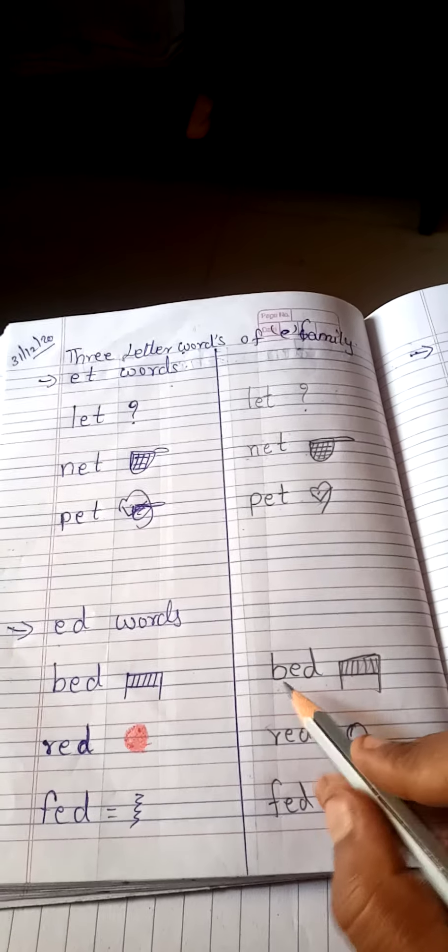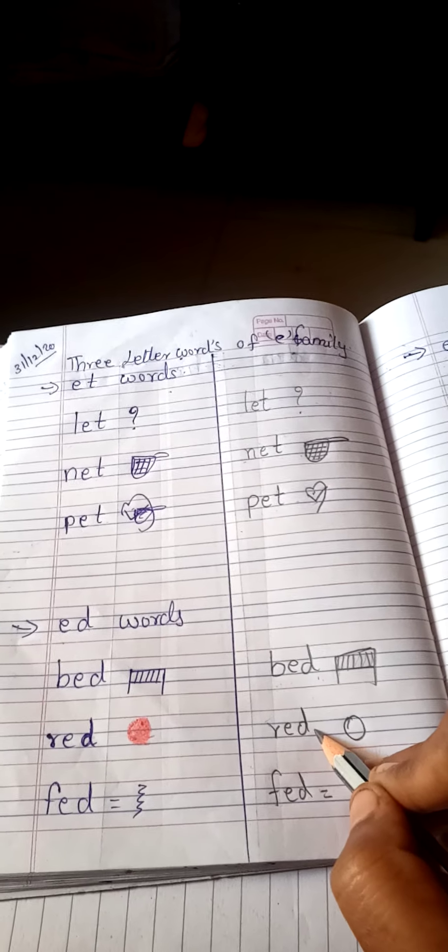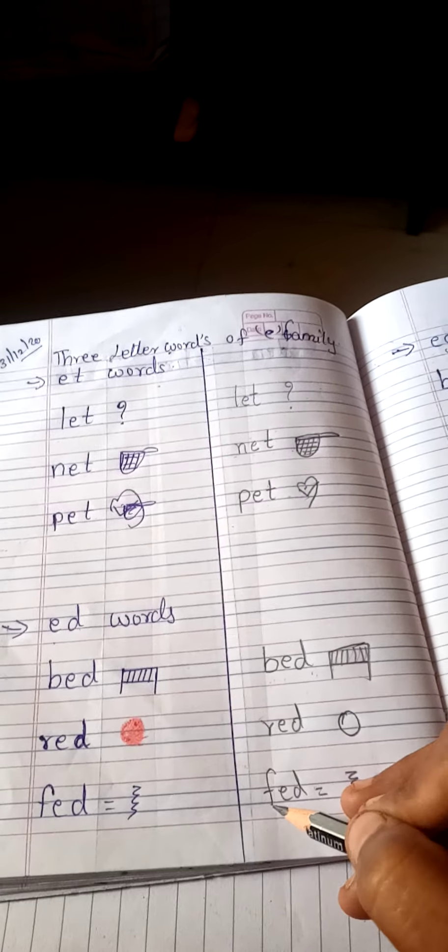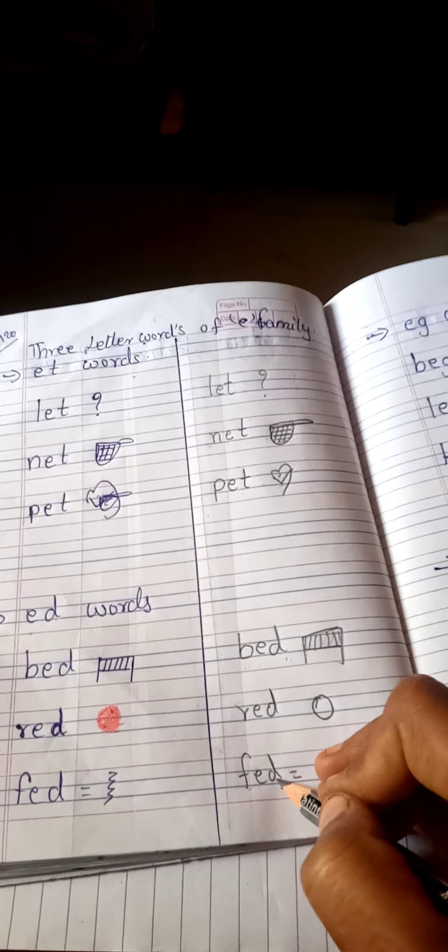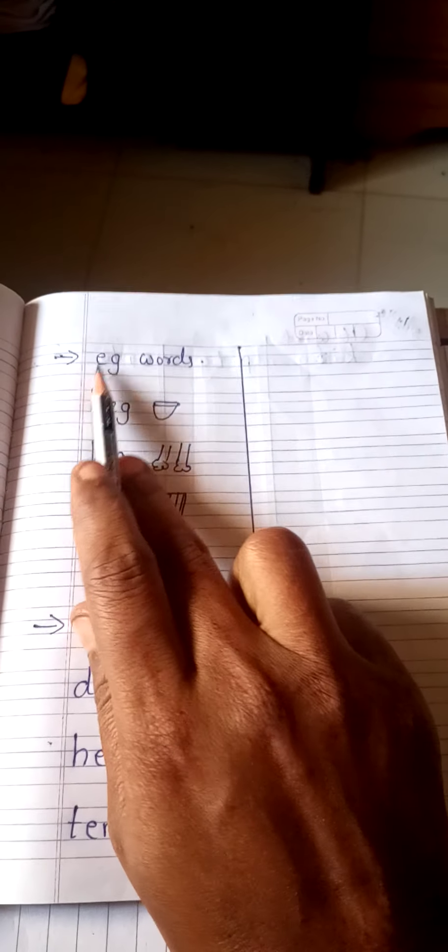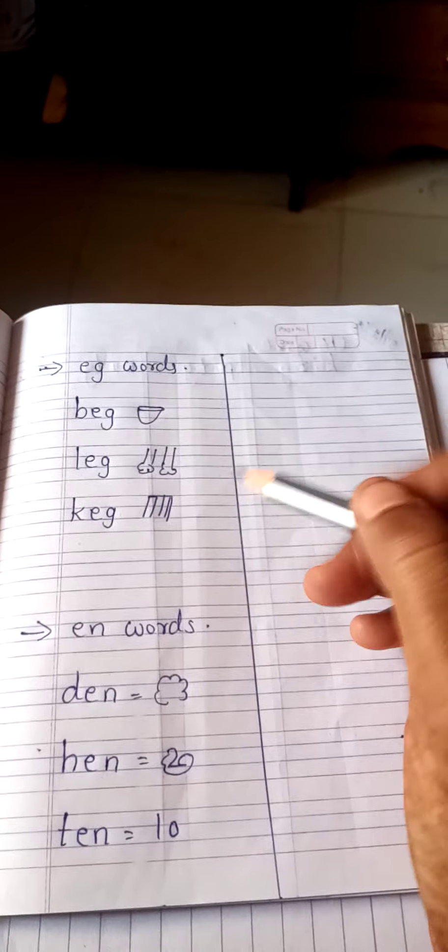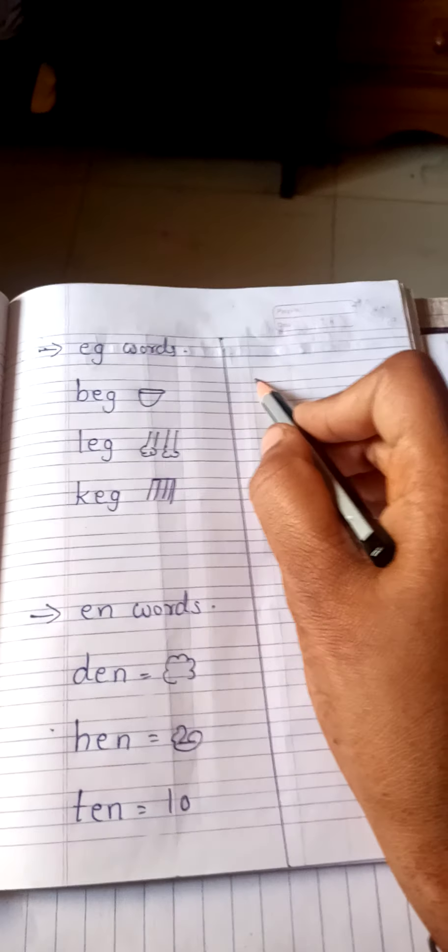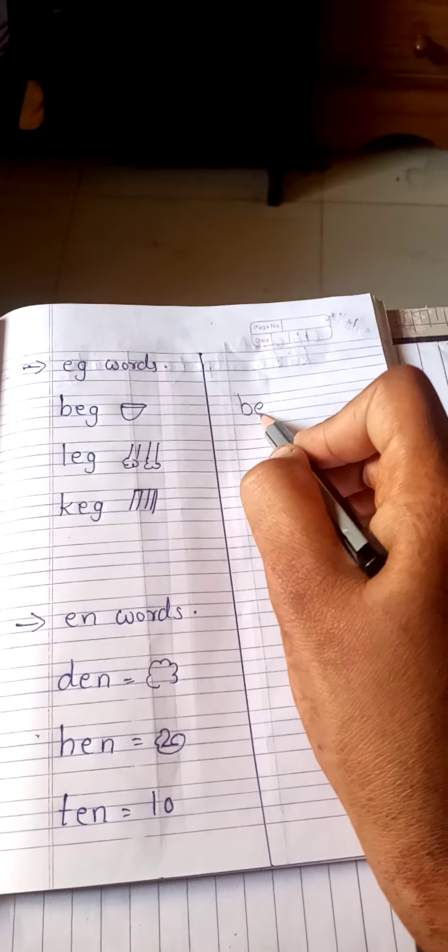Now children, E-G words. What is this? E-G words. Now next, B-E-G, beg. B-E-G, beg, beg.